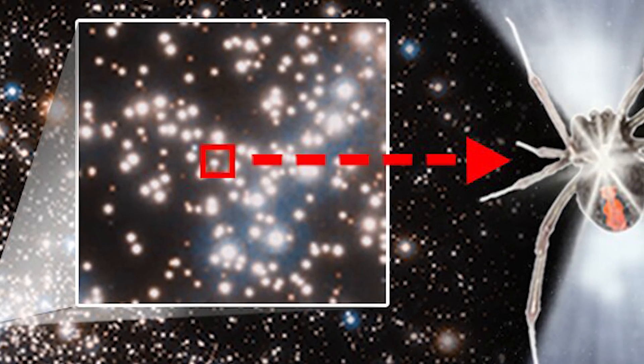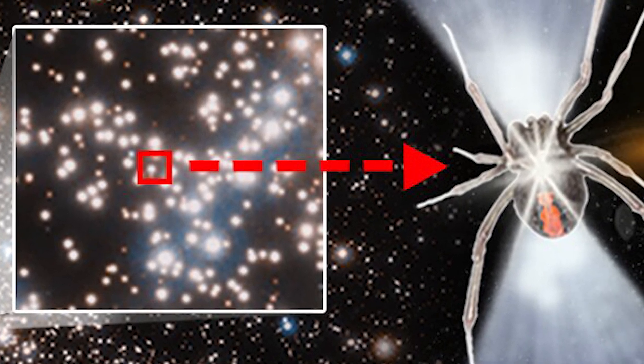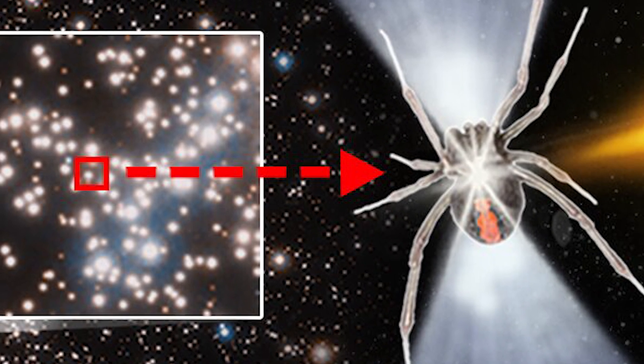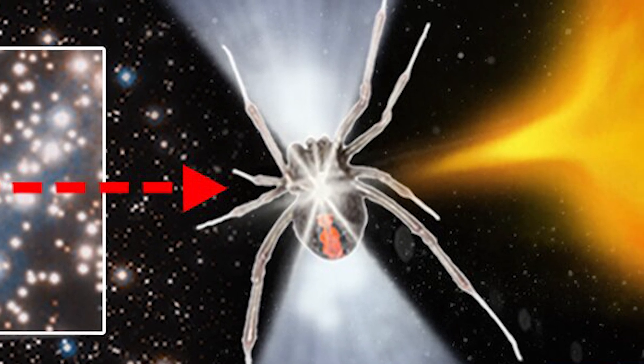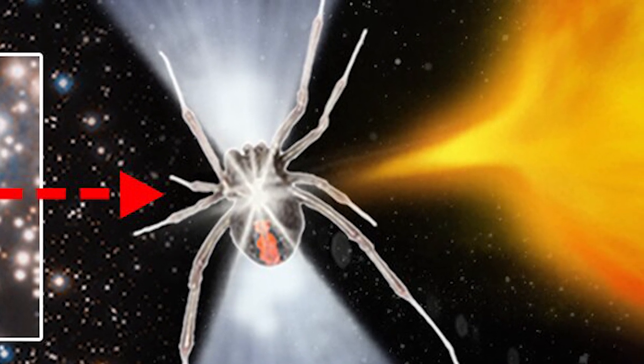This orbital period is also consistent with the previously discovered X-ray source, U18, which was previously thought to be a hidden MSP. The current research has determined that U18 is NGC 6397b.